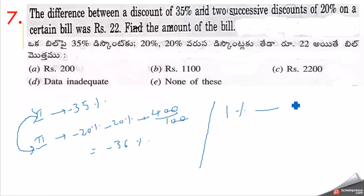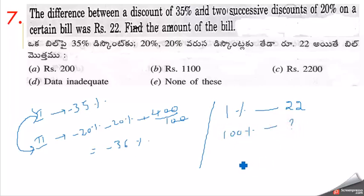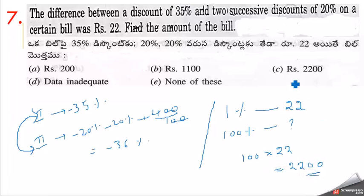That 1% difference equals 22 rupees. Since 1% of the bill is 22 rupees, 100% of the bill equals 100 into 22 equals 2200 rupees. So the bill is 2200 rupees.